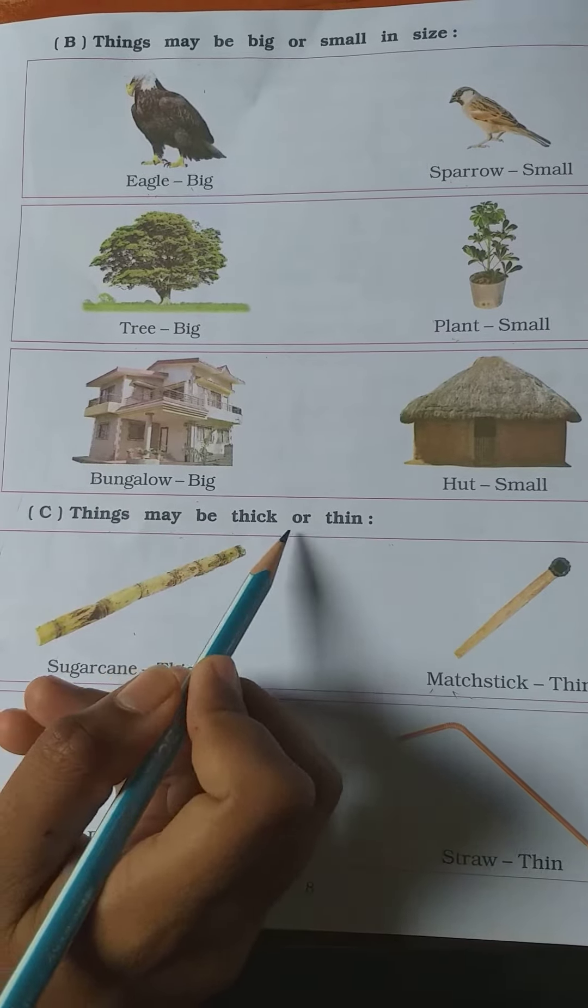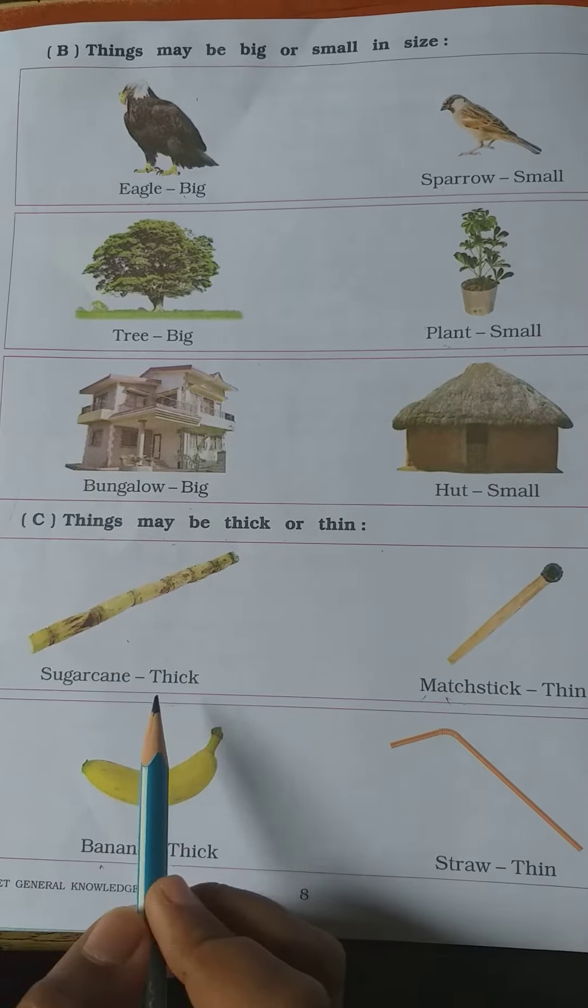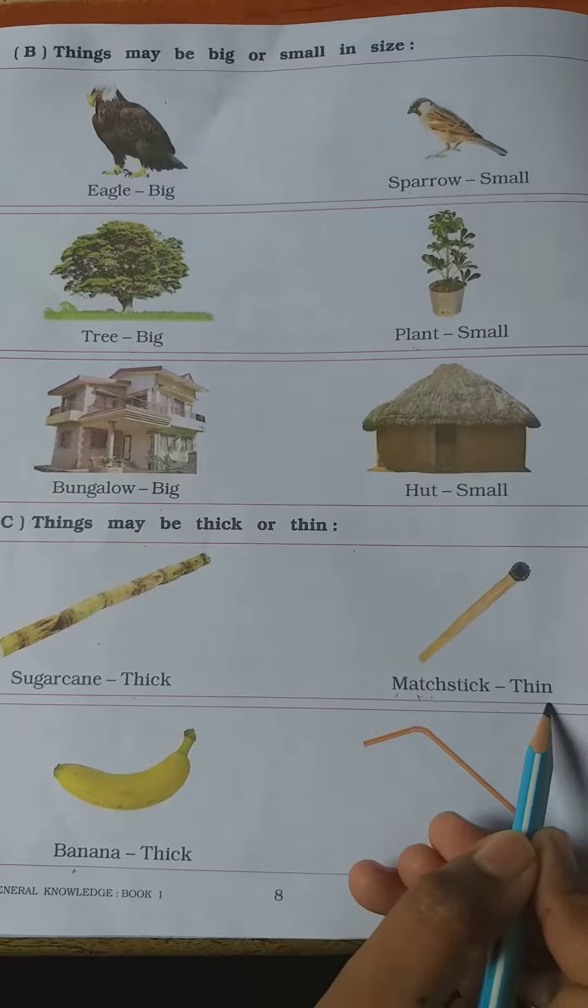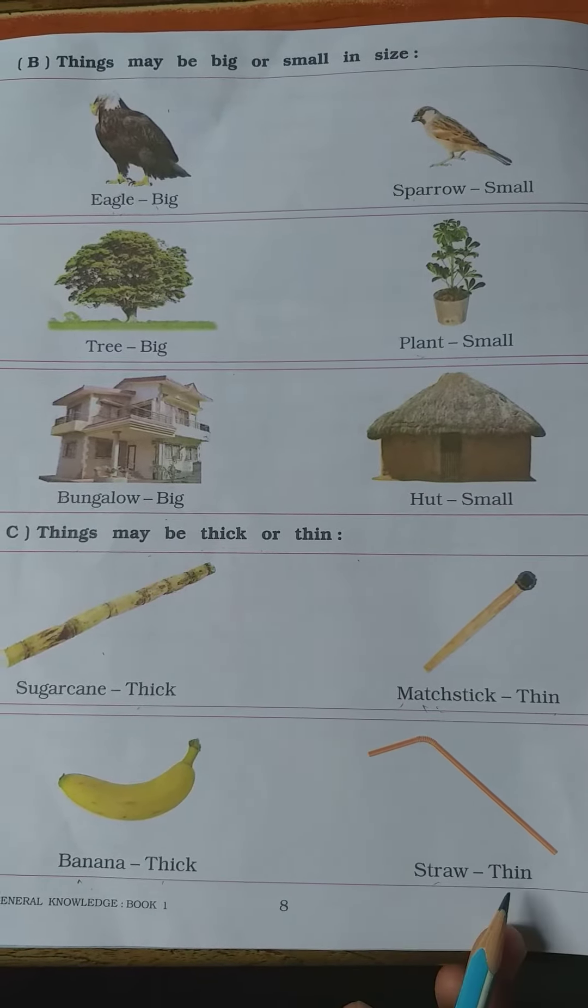C. Things may be thick or thin. Sugar can is thick, magistrate is thin, banana is thick, straw is thin.